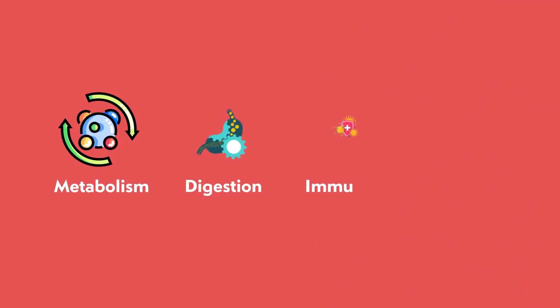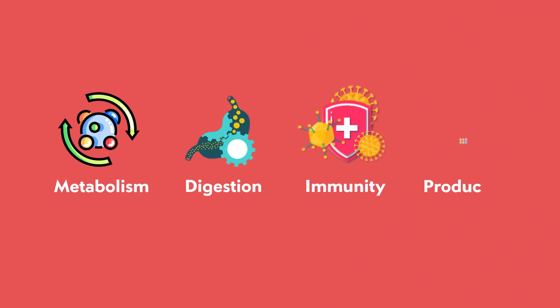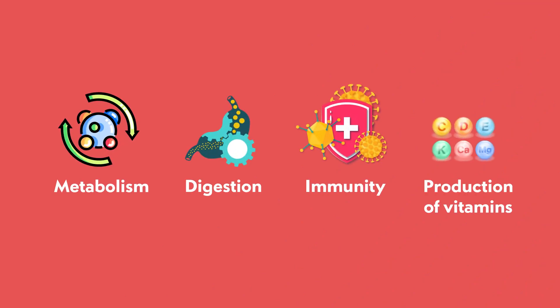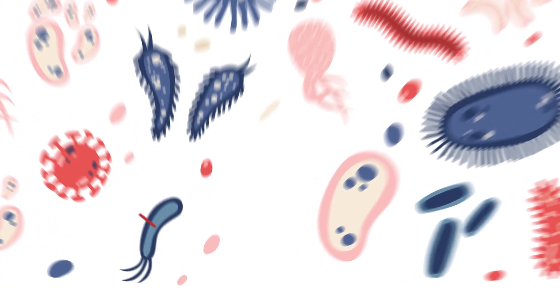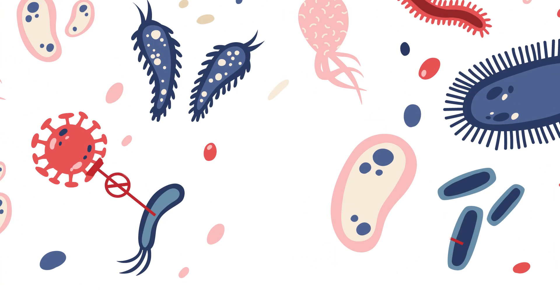These physiological processes include metabolism, digestion, immunity, and the production of vitamins. For instance, many beneficial microbes can suppress the growth of harmful microbes within the gut.